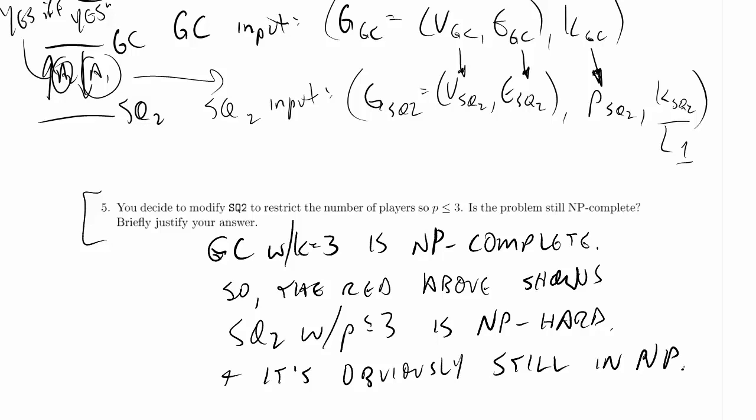You don't get to say in general, it's obviously in NP. That's not acceptable. But we did above show that sq2 was in NP and what we've done here doesn't invalidate what we did above. Actually we don't even have to do any extra checking above. We already checked that our certificate didn't use more than the number of available players and now the number of available players is no more than 3, so this is no problem.